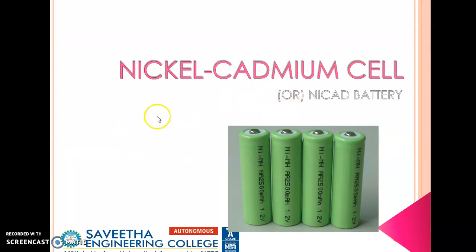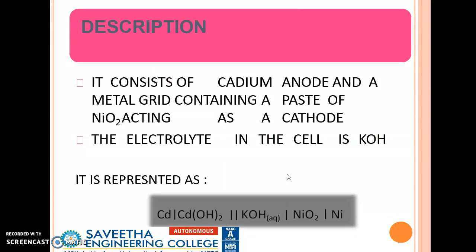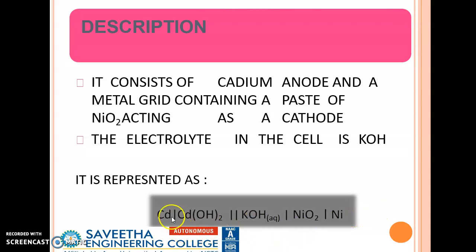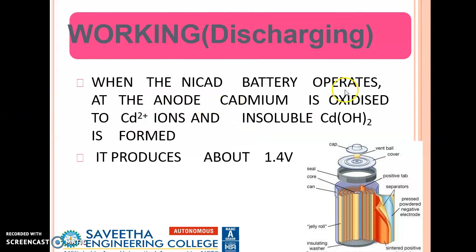Next we move on to NiCAD battery, or nickel cadmium cell. It consists of a cadmium anode and a metal grid containing a paste of nickel oxide acting as a cathode. The electrolyte is potassium hydroxide. The cell representation is: Cd | Cd(OH)₂ ‖ KOH | NiO | Ni — the anodic half cell followed by the cathodic half cell. When the NiCAD battery operates, cadmium is oxidized to Cd²⁺ ions, forming insoluble cadmium hydroxide when combined with potassium hydroxide, producing about 1.4 volts.